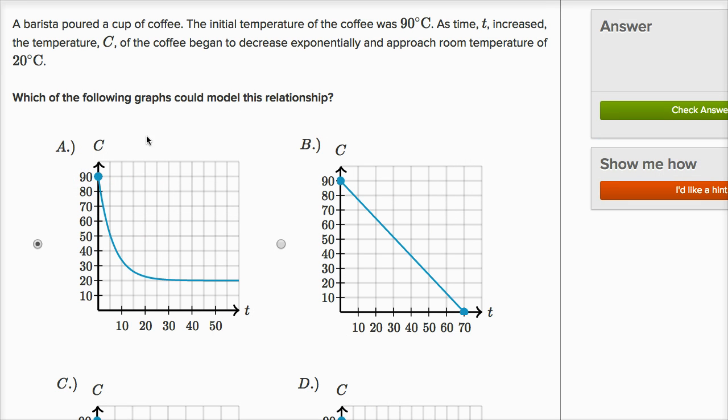It's an exponential, it's decreasing exponentially, starting at 90 degrees Celsius, and it's approaching the room temperature of 20 degrees Celsius. Let's do another one of these.